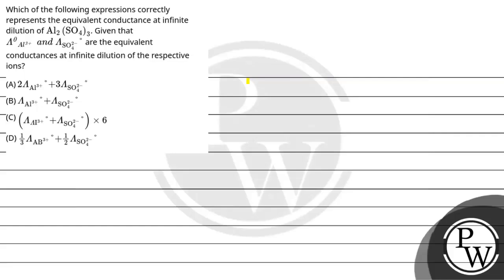Hello Bachchan, let's read the question. The question says, which of the following expressions correctly represents the equivalent conductance at infinite dilution of Al₂(SO₄)₃, that is aluminium sulfate? Given that λ⁰ of Al³⁺ and λ⁰ of SO₄²⁻ are the equivalent conductances at infinite dilution of the respective ions.